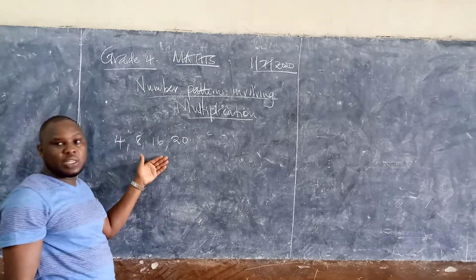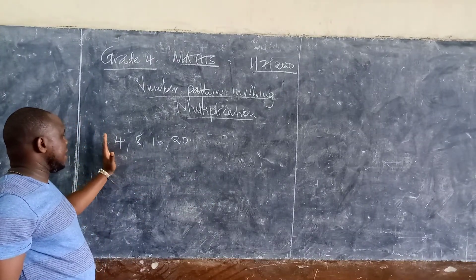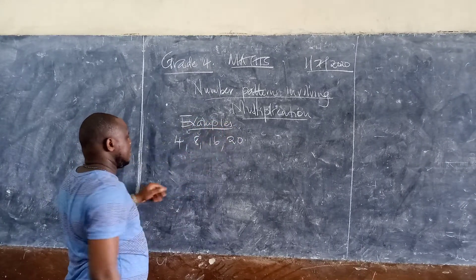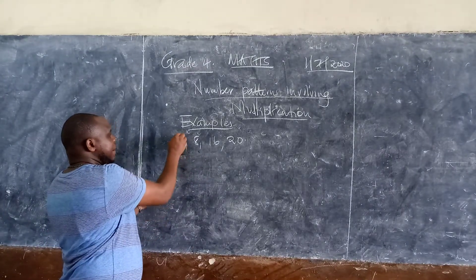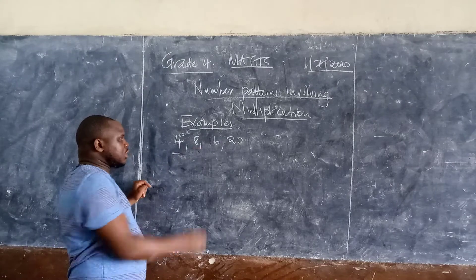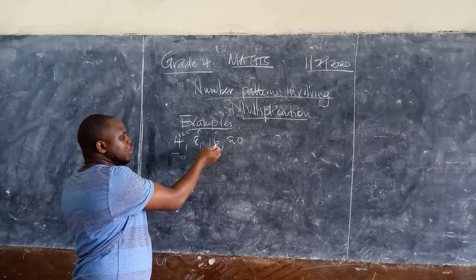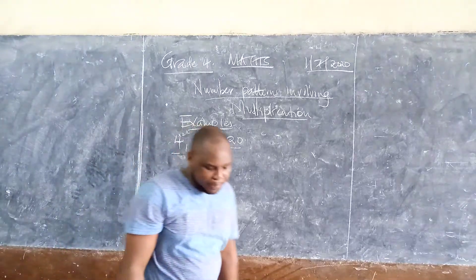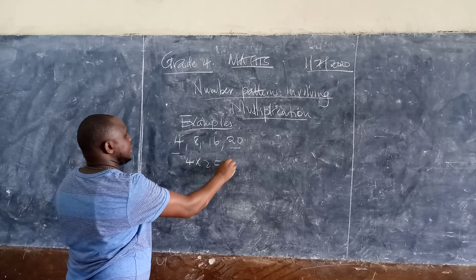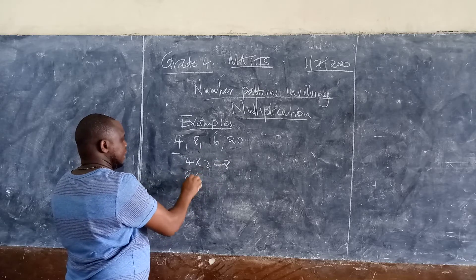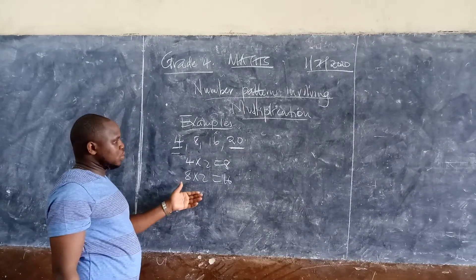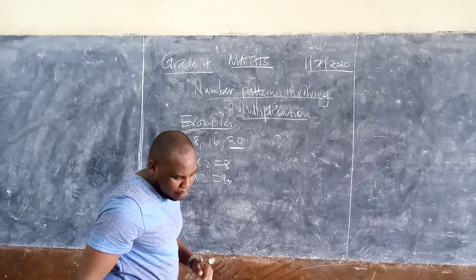So once you understand what has happened to this number pattern — what is happening to the first number for us to be able to get to the second number. If you look at this, you realize that the first number has been multiplied by two to get the second number. So if you multiply four by two, because you are talking about number patterns involving multiplication, you get the next number. But look here — this sixteen, this is twenty. So four times two is eight, eight times two is sixteen, and then this is twenty. Four times five gives you twenty.